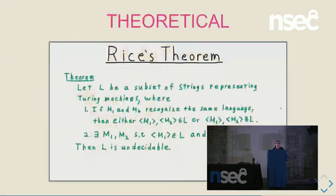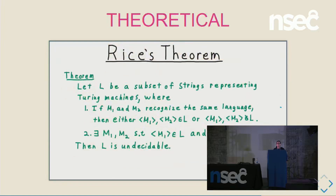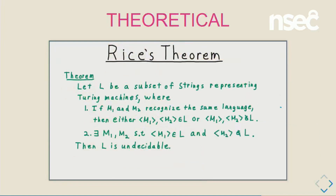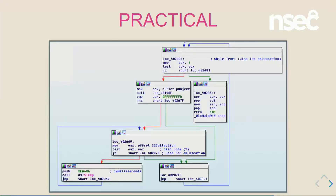Now the limitations. If you think about the theory — and I think everybody knows what the halting problem is — it means it's impossible to write software that will prove that your software is safe, because software cannot execute another program to completion. And the practical limitation is: you need someone behind the code when you start, because SMT solvers cannot generate the first constraint themselves. You need a person to say: this is a constraint, I know it's not going to happen.